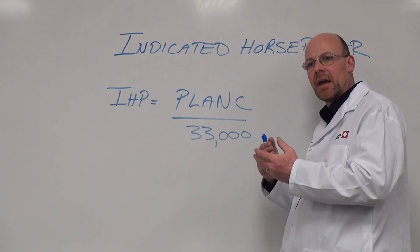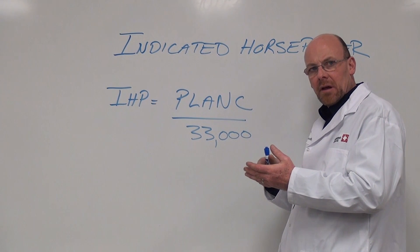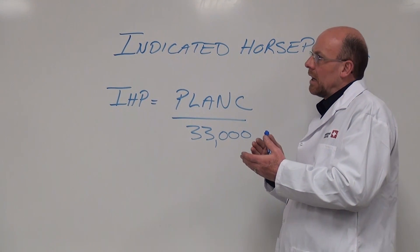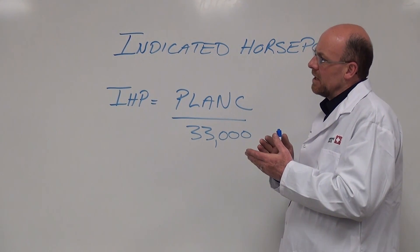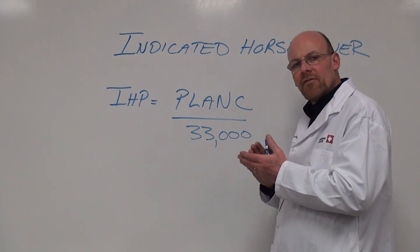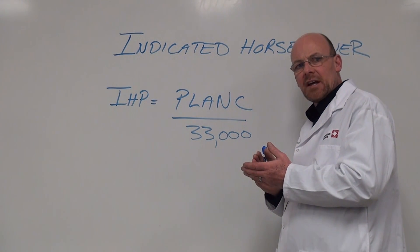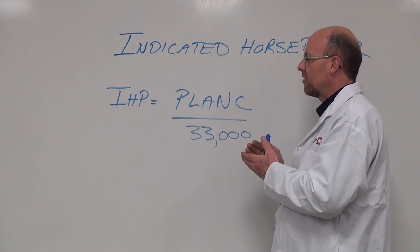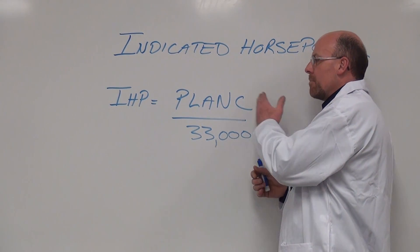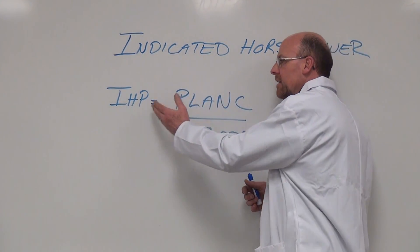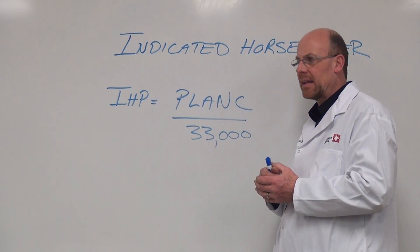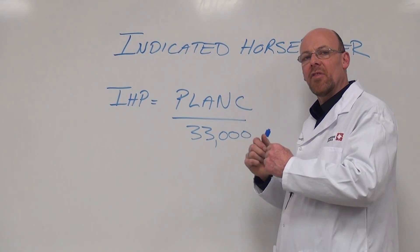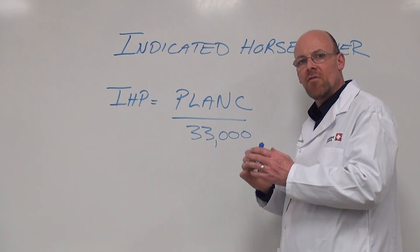Then they need to take a look at frictional horsepower losses, accessory loads, and the mechanical efficiency of the engine. Through calculation, they can create what's called brake horsepower based on indicated horsepower values. Indicated horsepower is always a theoretical value.